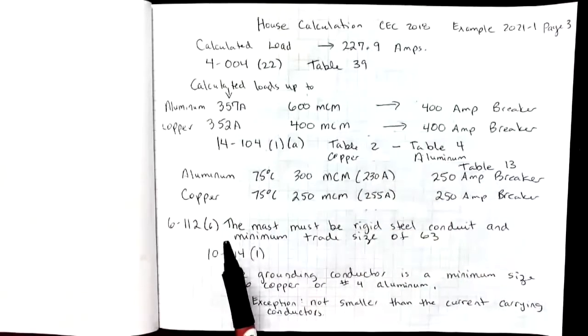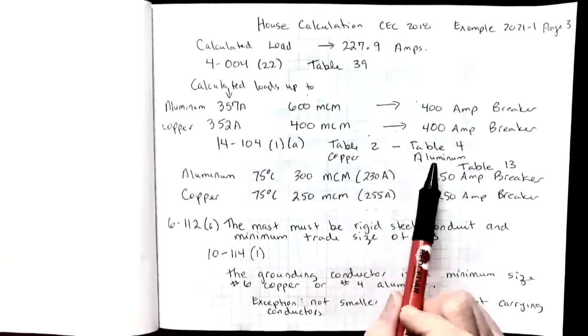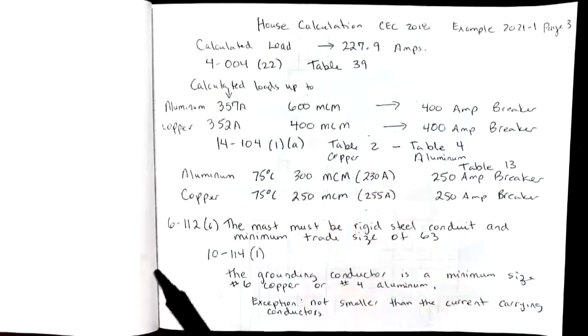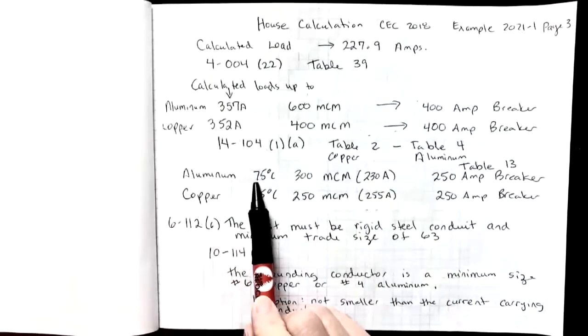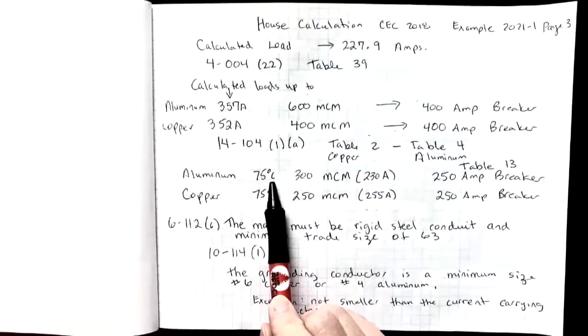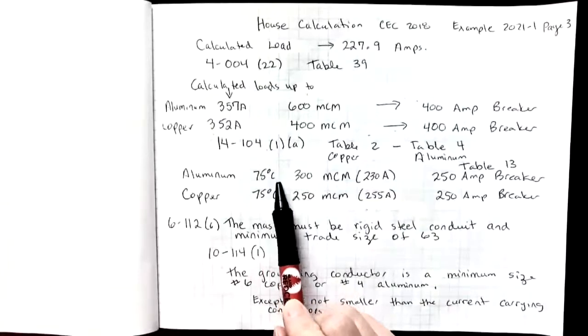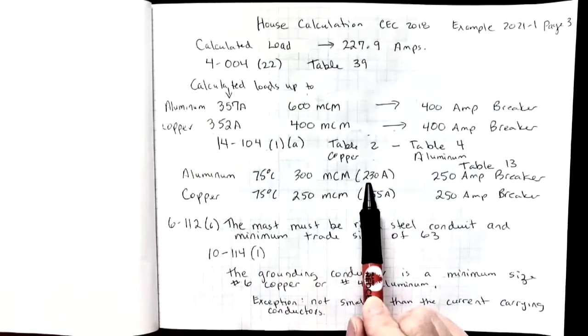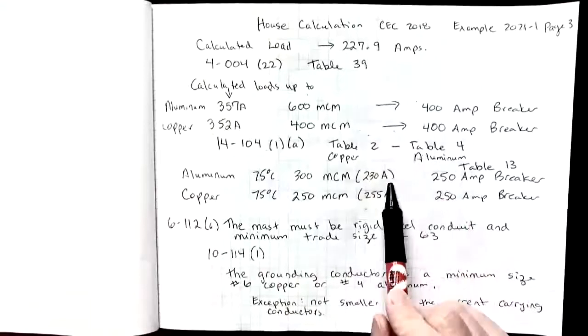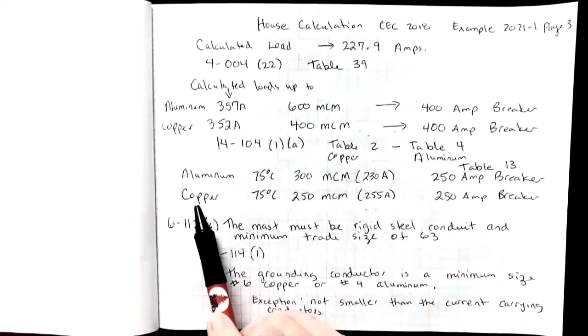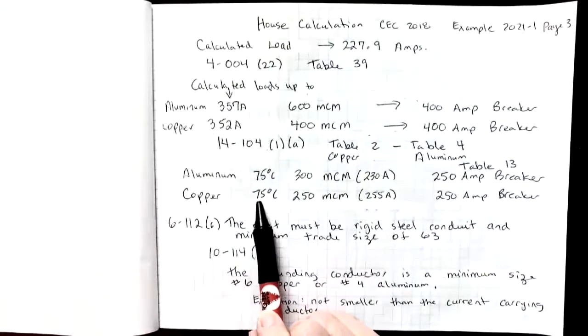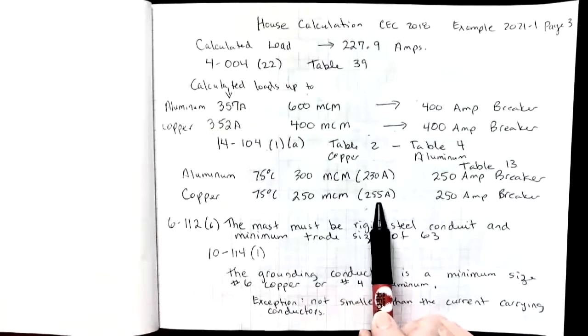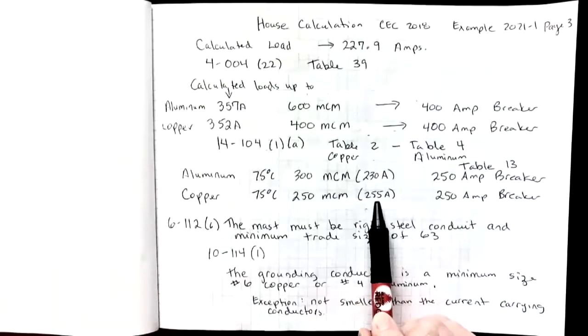I'm going to go and look in table 2 for copper, in table 4 for aluminum, and see if I can find a wire that will just carry that load. When I go to table 4 for aluminum in the 75 degree column because our breaker and our equipment is limited to 75 degrees, I see that I could actually use a 300 MCM wire. That would be good for 230 amps. My load is only 227.9. That would carry my load. Or if I'm looking for copper, I would go to table 2, 75 degree column again, and I could actually see that the 250 MCM copper wire would be good for 255 amps. So either one of those two wires would work.